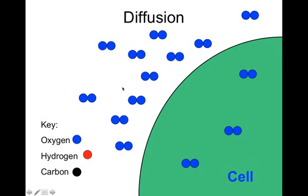One of the simplest ways things get into a cell is through diffusion. Here we have a cell, and out here is the cell's environment. Each of these circles is an atom. Looking at our key, this is O2, the oxygen we breathe. Counting these oxygen molecules, there are only three inside the cell and eleven outside the cell.